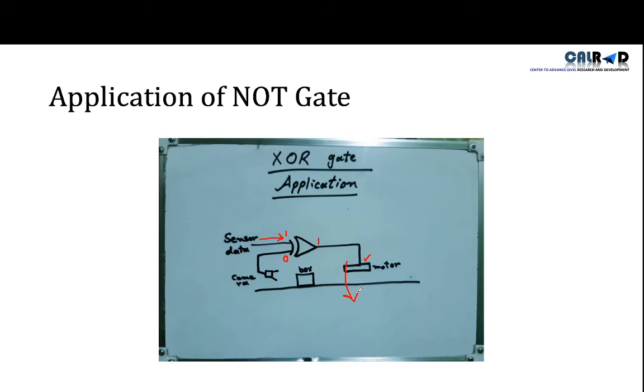Because we only need the yellow box. If the color is yellow, then here it will be 1, so both 1, it will be zero here. Motor will not work and the box will pass and go to the destination. So this is one of the application of XOR gate. Now you should also go and search on internet for different types of applications of XOR gate.